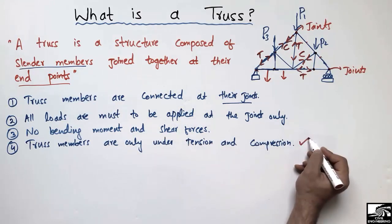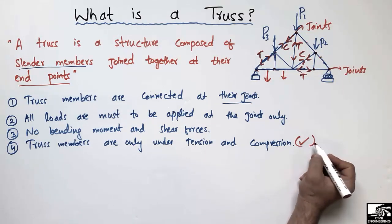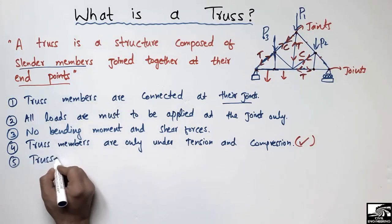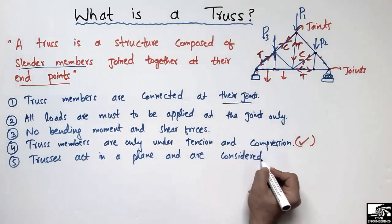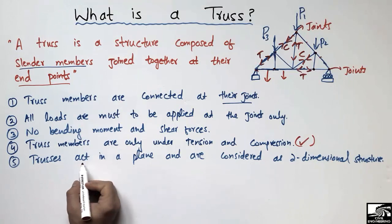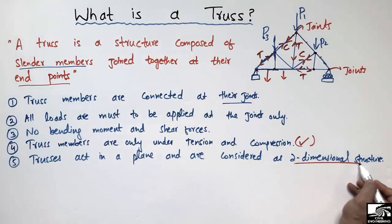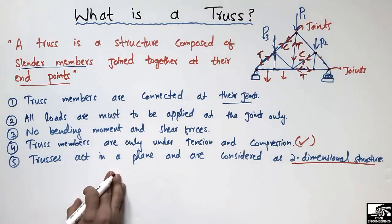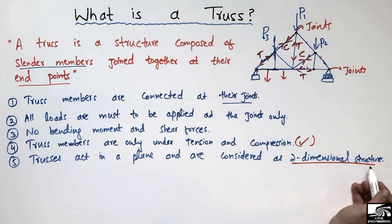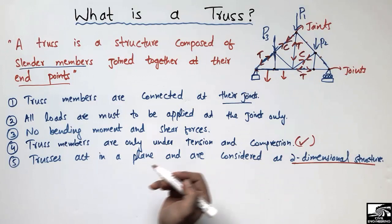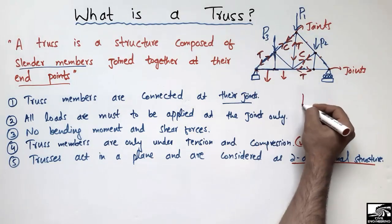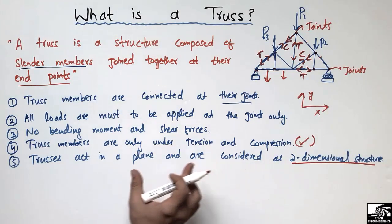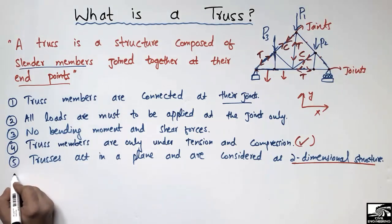The fifth important point is that the truss lies in a plane and is considered a two-dimensional structure. Truss members only have an x-axis and a y-axis — there is no z-axis. That is why the truss is considered to be in a plane.